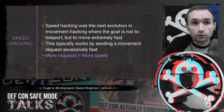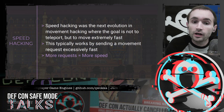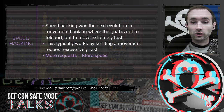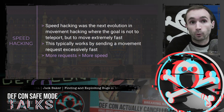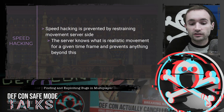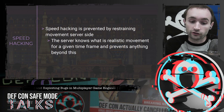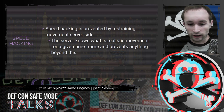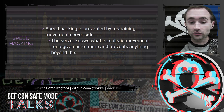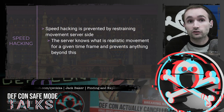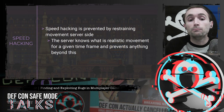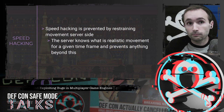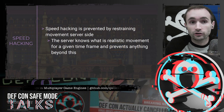This led to speed hacking — the next evolution of movement hacking. The goal isn't necessarily to teleport, just to move extremely fast, typically by sending movement requests excessively fast. This was prevented by giving more authority and context to the server, so it can understand what realistic distance a character can move in a given timeframe and reject movement beyond that. This is how game engines have evolved: a constant process of moving trust away from the client and giving more authority, responsibility, and context to the server.